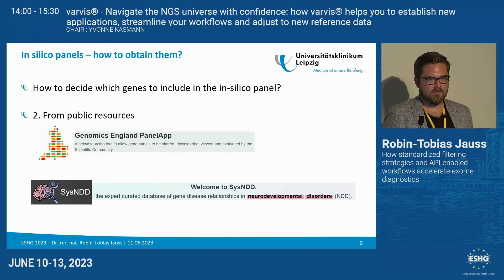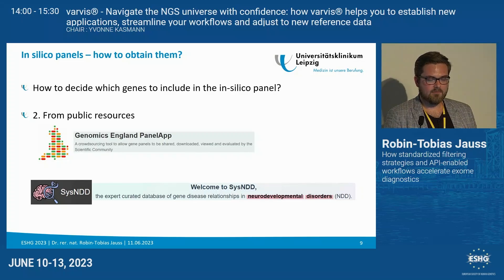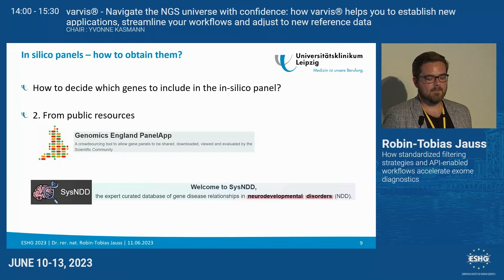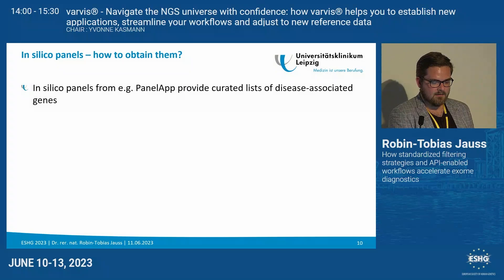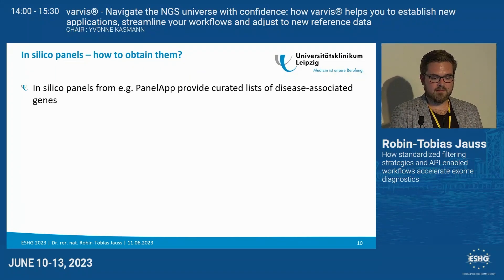We have a growing number of resources providing in silico panels. The two examples we use in Leipzig the most are the Genomics England PanelApp, providing detailed panels for specific disorders, and the SysNDD database, which provides a curated panel exclusively focusing on genes with a definite association with neurodevelopmental disorders. These in silico panels from PanelApp are usually expert-curated lists of genes with a definite disease association.